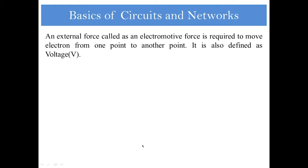An external force called electromotive force is required to move electrons from one point to another. It is also defined as voltage. Mathematically, V = dw/dq. The units will be joules per coulomb, or you can take the unit to be volts.